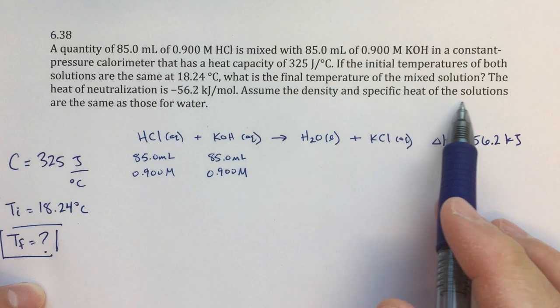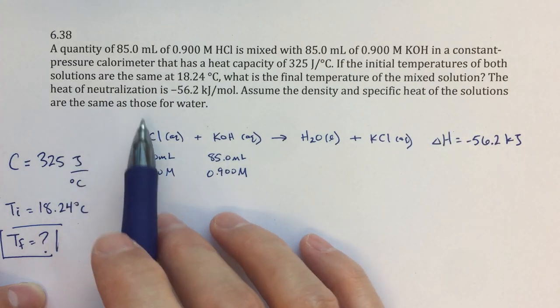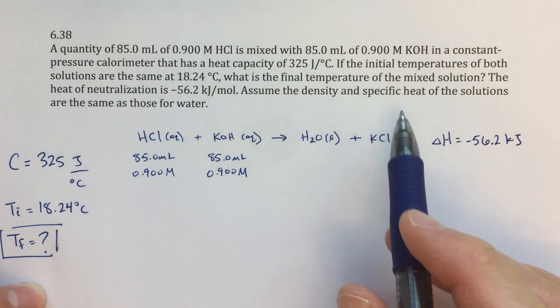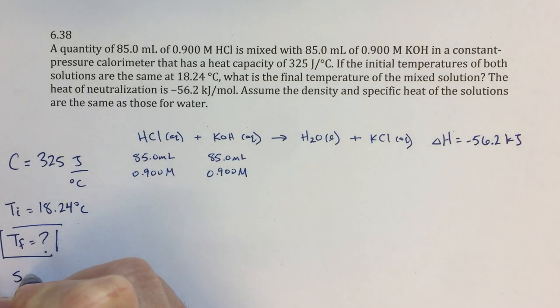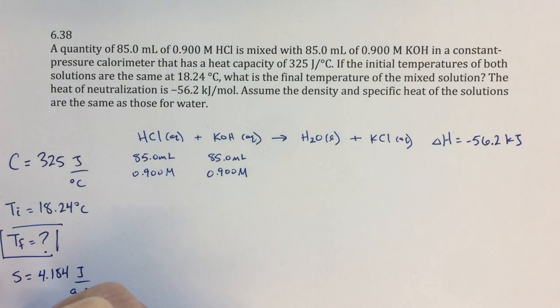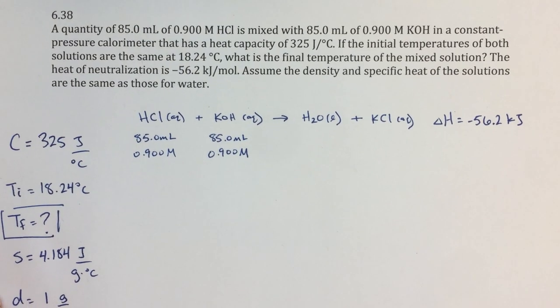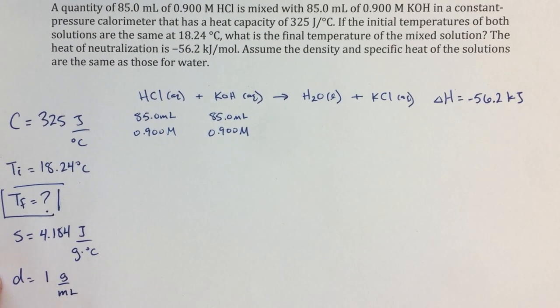And then assume the density and specific heat of the solutions are the same as those for water. So specific heat for water, that's going to be S equals 4.184 joules over grams times degrees Celsius. And then my density is going to equal 1 gram per milliliter. So that is all the information from the problem.